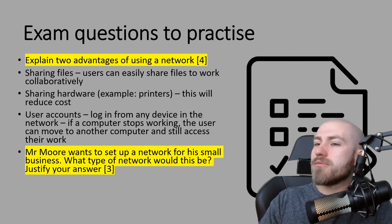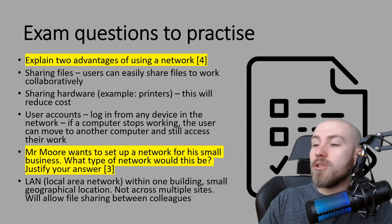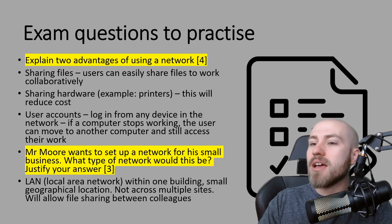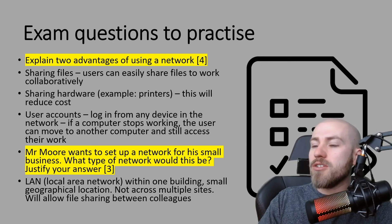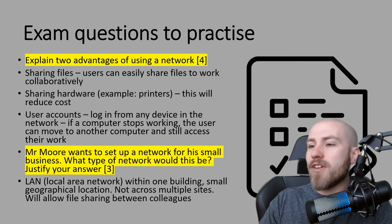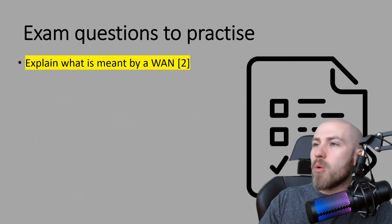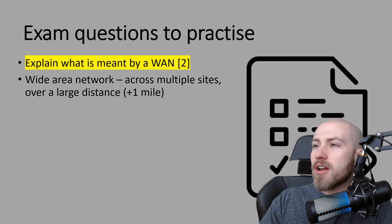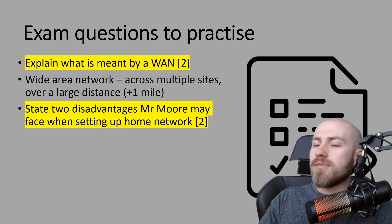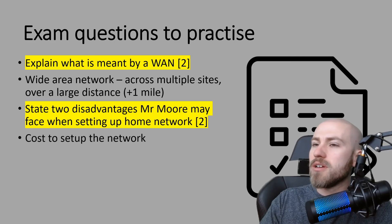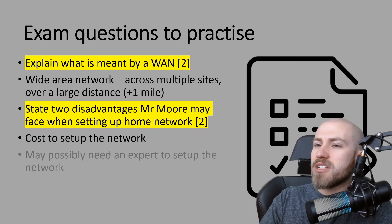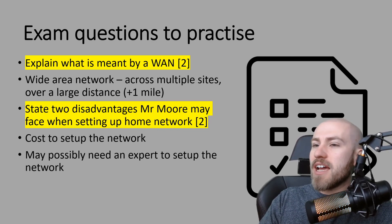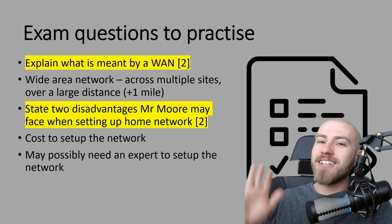Mr. Moore wants to set up a network for a small business — it would be a local area network, within one building, a small geographical location, not across multiple sites. As a final justification, it will allow file sharing between colleagues. For what is meant by a WAN: it's a wide area network across multiple sites over a large distance. The two disadvantages when setting up a home network are: the cost to set up the network initially, and that an expert may be needed to set it up. That's it for this session — see you next time.